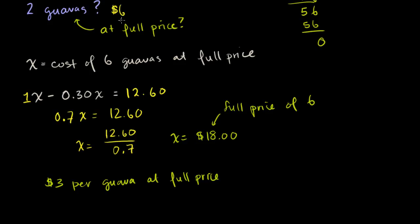Another way you could have done it, you could have just said, hey, 6 at full price are going to cost me $18. 2 is 1/3 of 6. So 1/3 of $18 is $6.